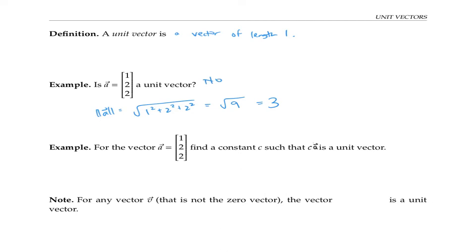Sometimes it's convenient to take a vector that's not a unit vector and rescale it to be a unit vector. In other words, multiply it by a scalar, by a number, so that that product is a unit vector. So what number would I have to multiply a by to get a vector of length one, given that its current length is three?